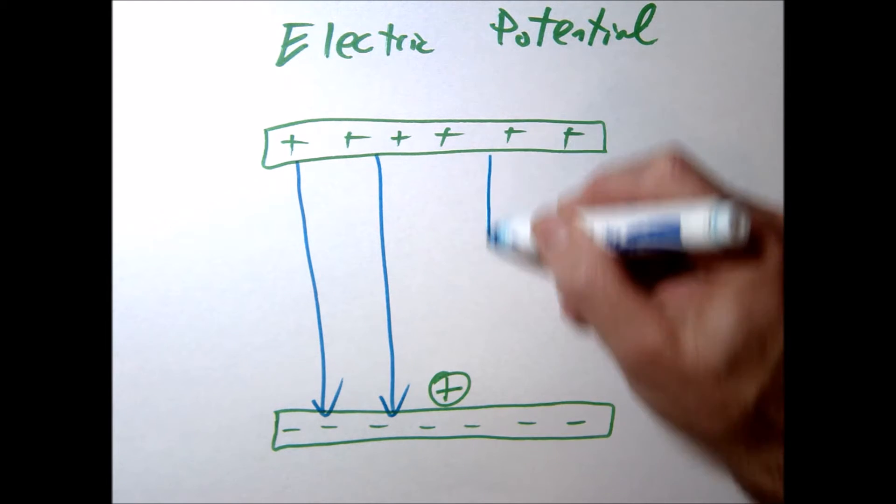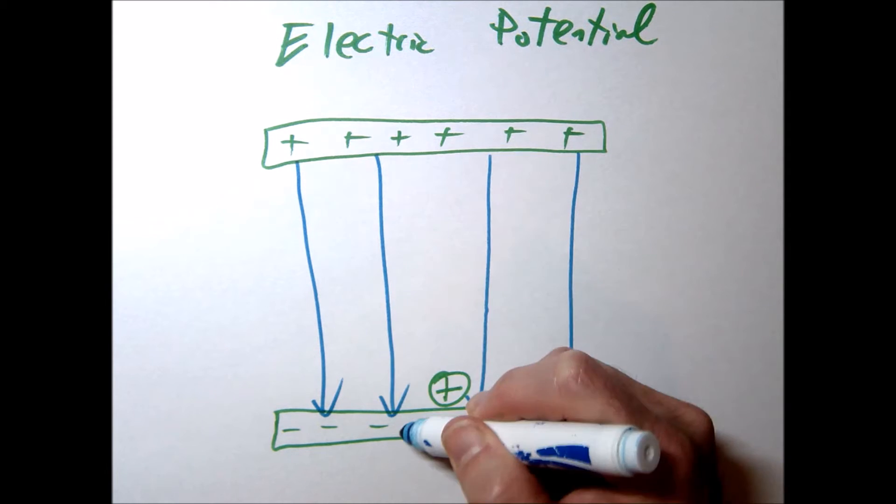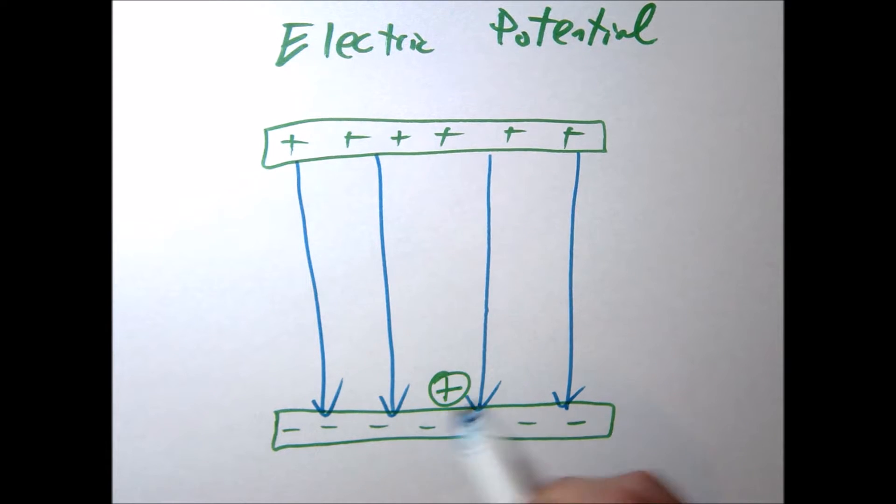Electric fields, remember, is what would happen to a positive charge. So if we put a positive charge, it's going to be pushed downwards, right? And actually, let's just place a positive charge down here at the bottom. Well, that charge all by itself, it's not going to move, it's just going to sit there.